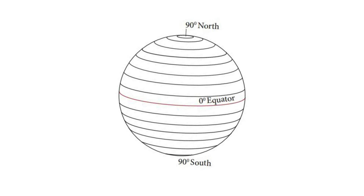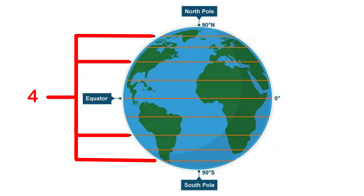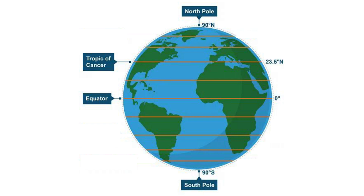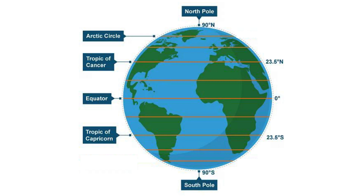As we move away from the equator, the size of the parallels of latitude decreases. Besides the equator at zero degrees, the north pole is 90 degrees north and the south pole is 90 degrees south. There are four important parallels of latitudes: first, the Tropic of Cancer at 23½ degrees north in the Northern Hemisphere; second, the Tropic of Capricorn at 23½ degrees south in the Southern Hemisphere; third, the Arctic Circle at 66½ degrees north of the equator; and fourth, the Antarctic Circle at 66½ degrees south of the equator.